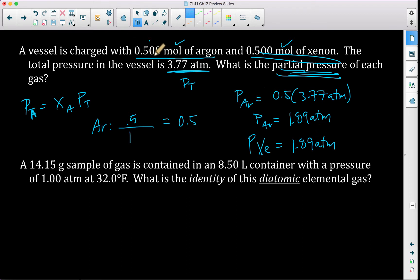Note that it would be more thoughtful if these said 0.5 grams of argon and 0.5 grams of xenon because what would we have to do first? We'd have to convert to moles first, and then we could calculate the partial pressures.